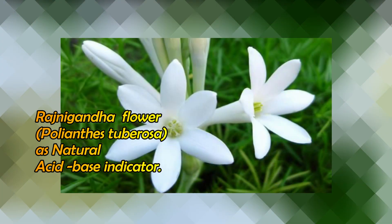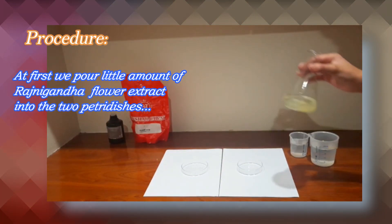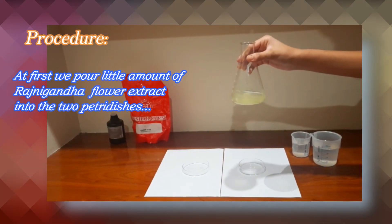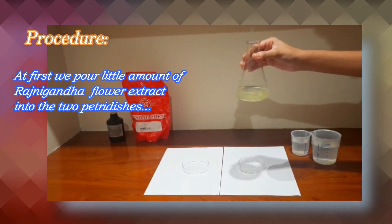Rajinigandha flower, or Polyanthus tuberosa, as a natural acid-base indicator. We pour a little amount of rajinigandha flower extract into the two petri dishes.